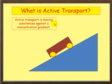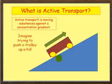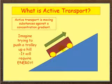Active transport is moving substances against a concentration gradient. Imagine this here being a gradient, and imagine trying to push a trolley up a hill. If you were trying to push something up a hill, it will require energy.